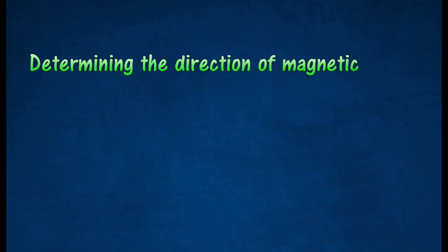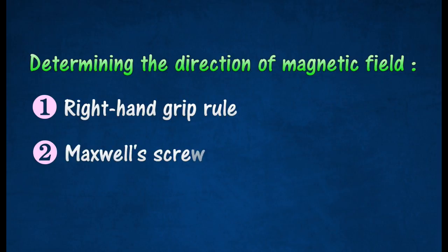There are two methods to determine the direction of the magnetic field: Right Hand Grip Rule and Maxwell's Screw Rule.